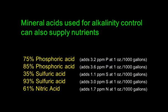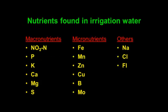One part of that is from mineral acids. If you acidify to get rid of alkalinity, you will probably also add nutrients to the water. So if you're using phosphoric acid, you're going to add phosphorus to the solution. If you're adding sulfuric acid, you add sulfur; nitric acid adds nitrogen. The concentration you add will also influence the concentration of those nutrients you're going to apply.